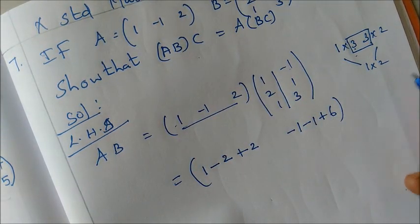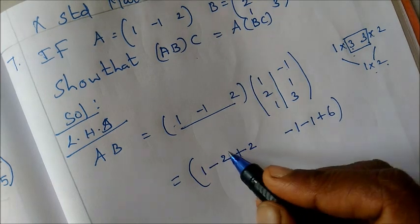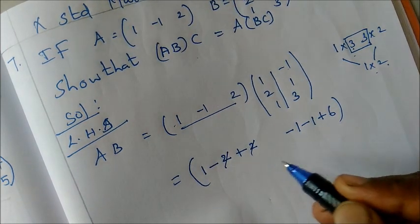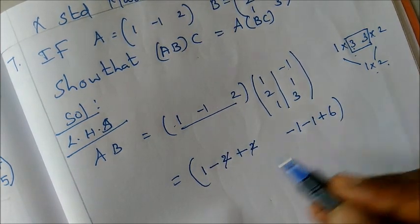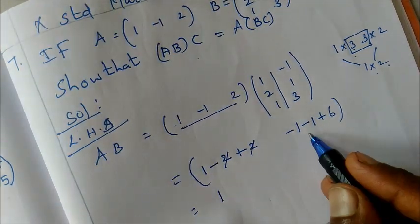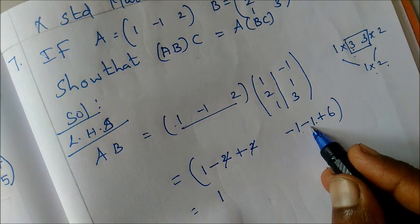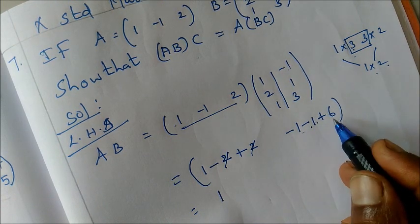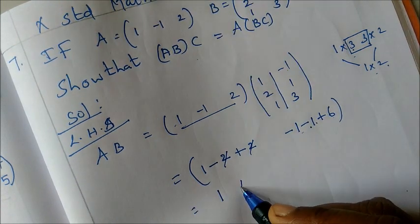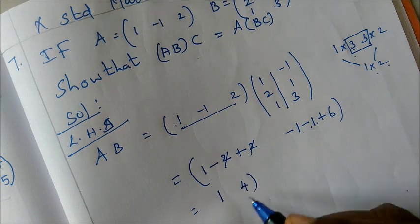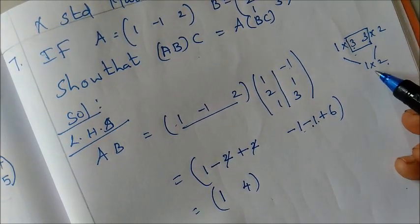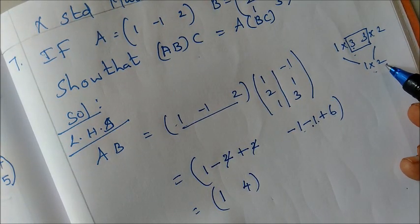For the first row first column: 1−2+2 = 1. For the first row second column: −1−1+6 = 4. Wait, checking: −1 minus 2 = −2 plus 4 gives... AB = [2, −2], a 1×2 matrix. Both entries confirmed.